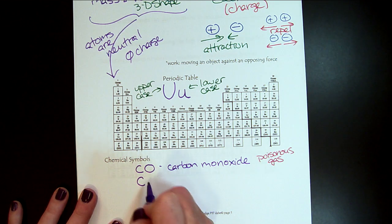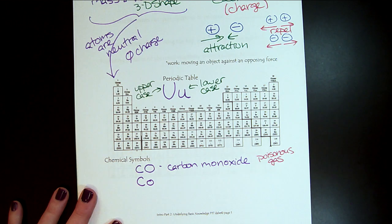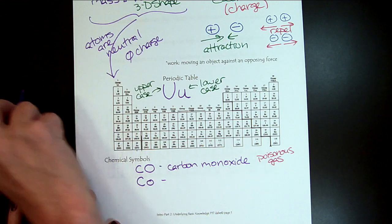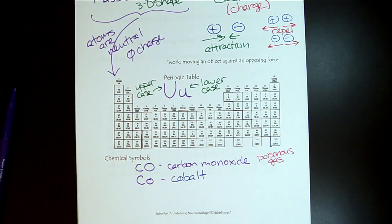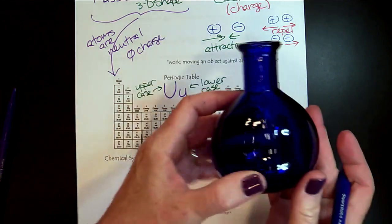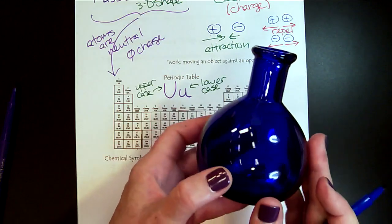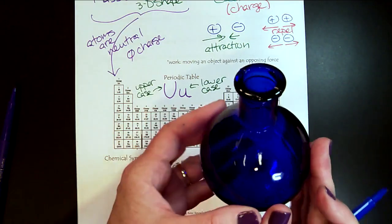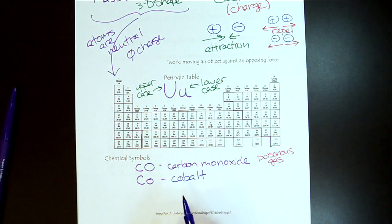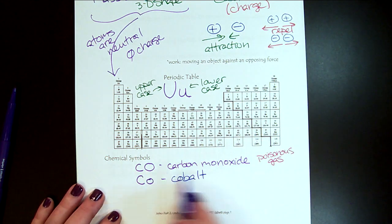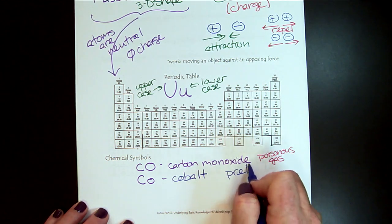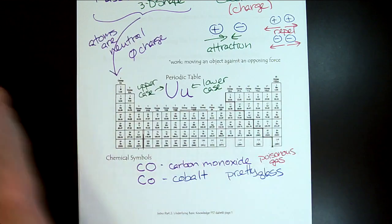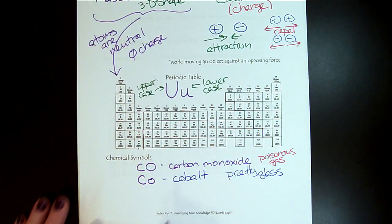Now let's look at uppercase C, lowercase O. What is this? Many of you probably know. This is cobalt. It's a mineral. And if you like flowers, beautiful vases. So this is some silica oxide that's been doped with cobalt. It makes this beautiful glass. So two uppercase letters, poison. Uppercase, lowercase, pretty glass. Why we care. A couple more examples to convince you.